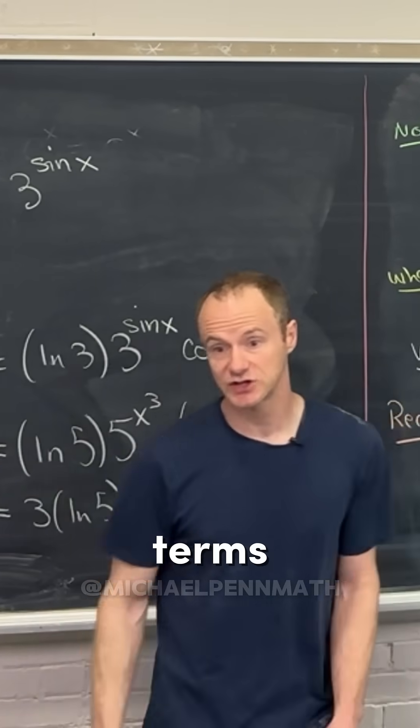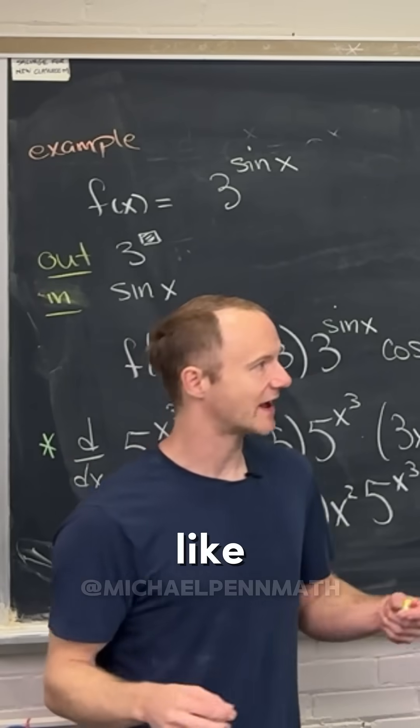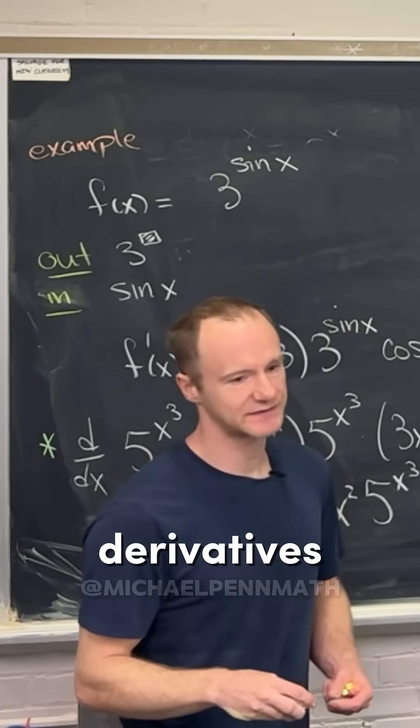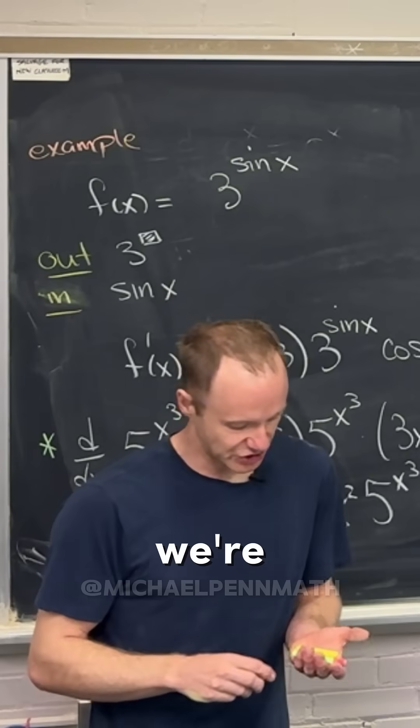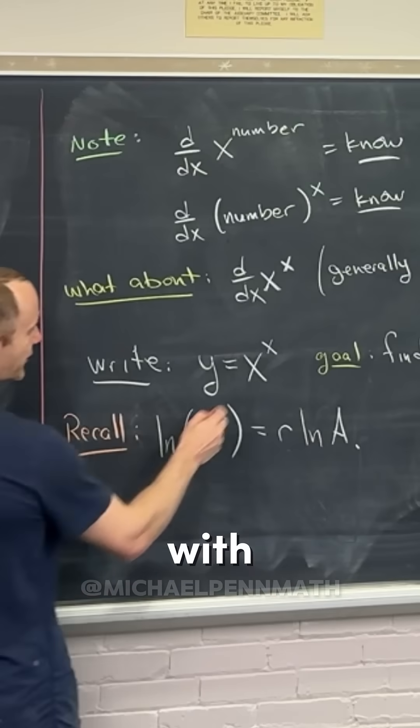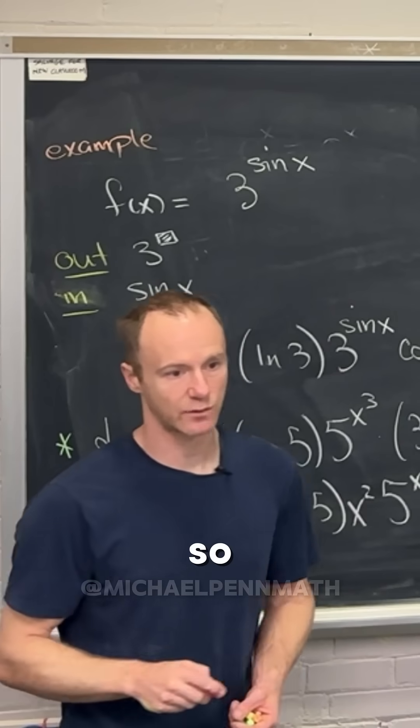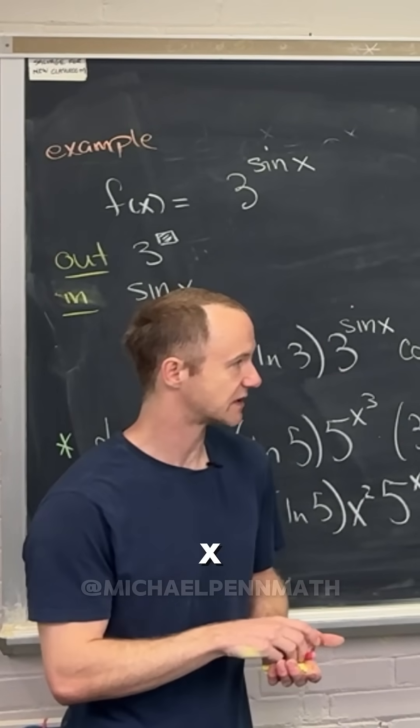But we really want everything in terms of x. When doing general implicit derivatives, that's impossible, but that's not what we're doing here. We started with this y equals x^x, so we know how to write y in terms of x.